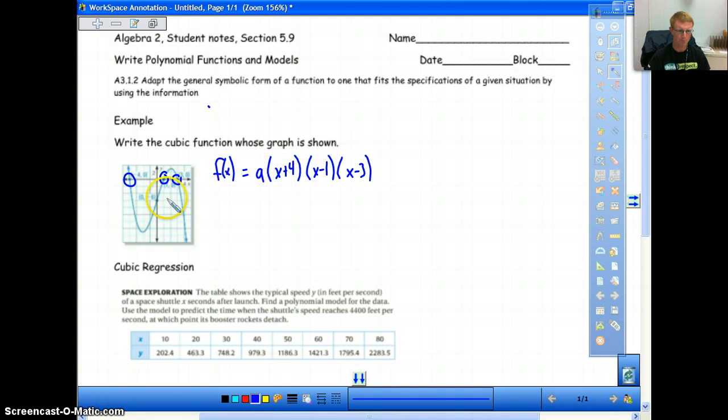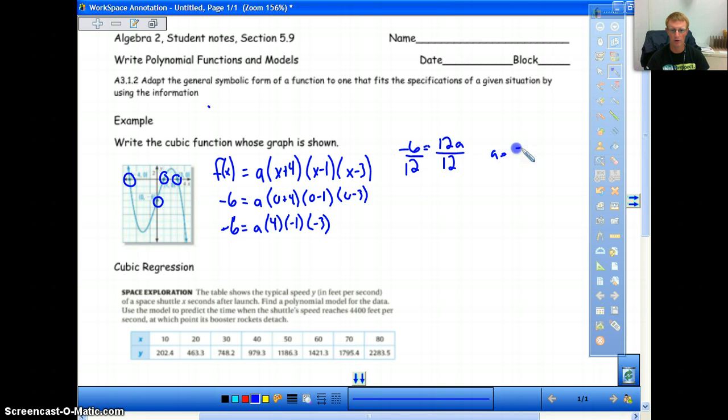So what we do then, is from here we take the last point that's given to us, typically a y-intercept, and we just plug in the values and solve for our a. We know that our y is negative 6, so we say negative 6 equals a, and then we just put in our 0, because that's what it is, 0 comma negative 6. 0 plus 4, 0 minus 1, and 0 minus 3. So we have negative 6 equals a times 4 times negative 1 times negative 3. We actually have negative 6 equals 12a. We divide both sides by 12, and we get a equals negative 1 half.